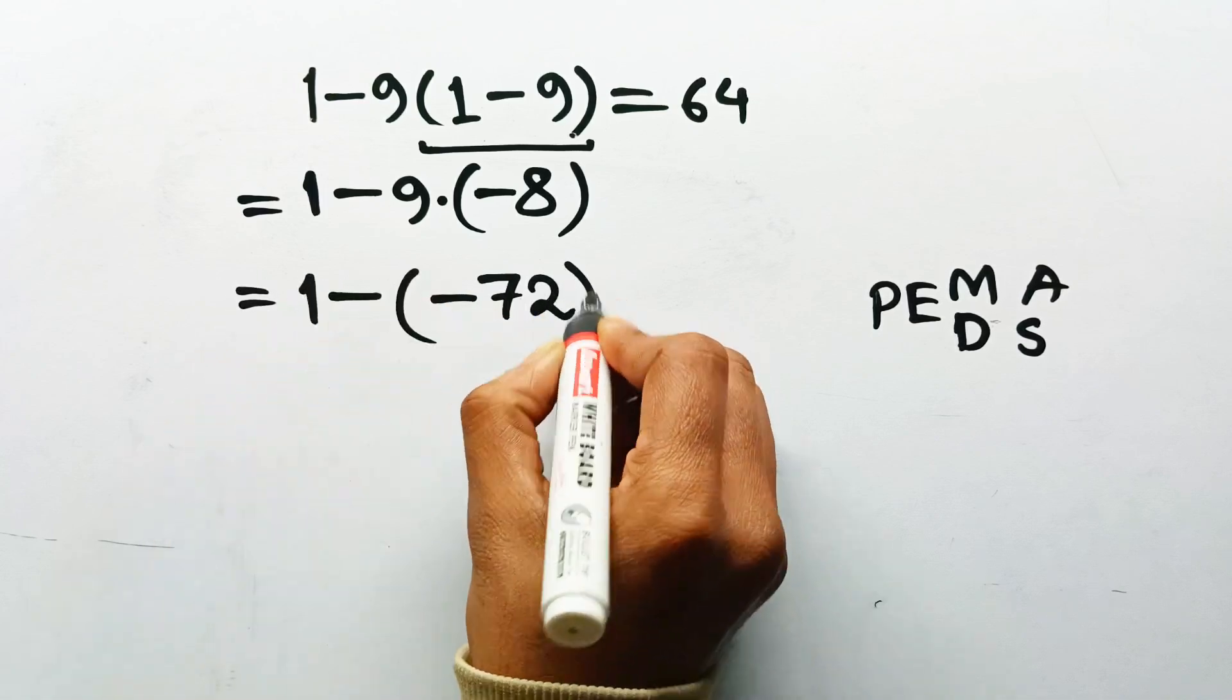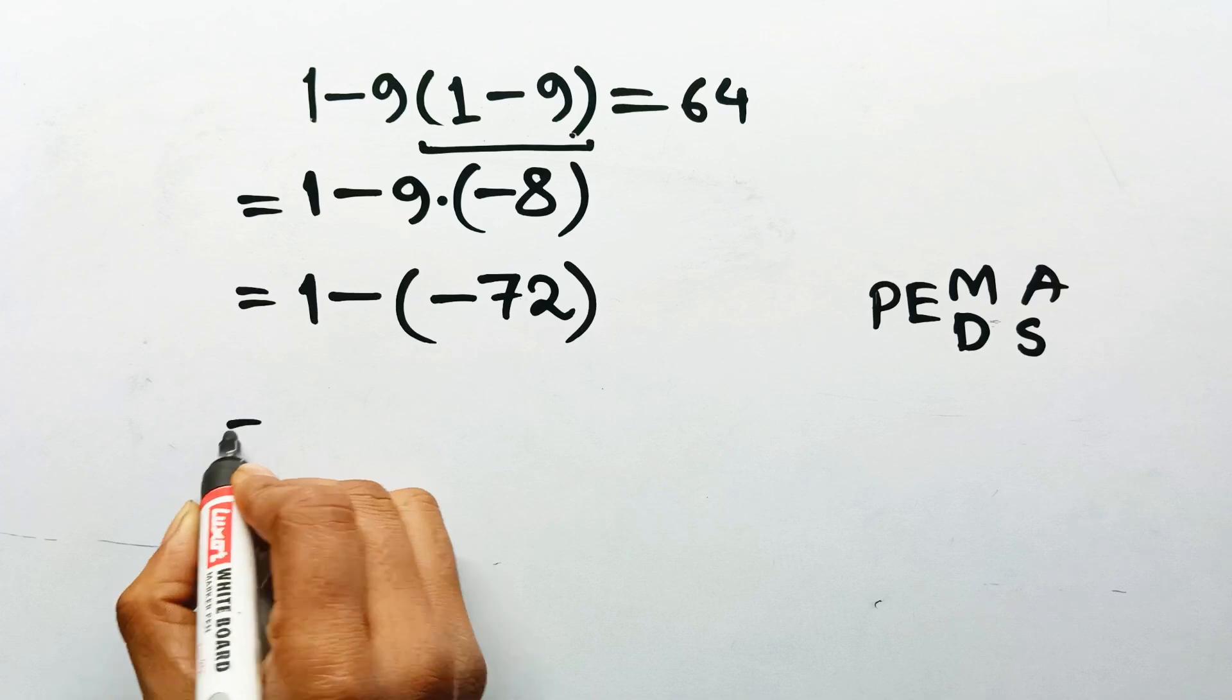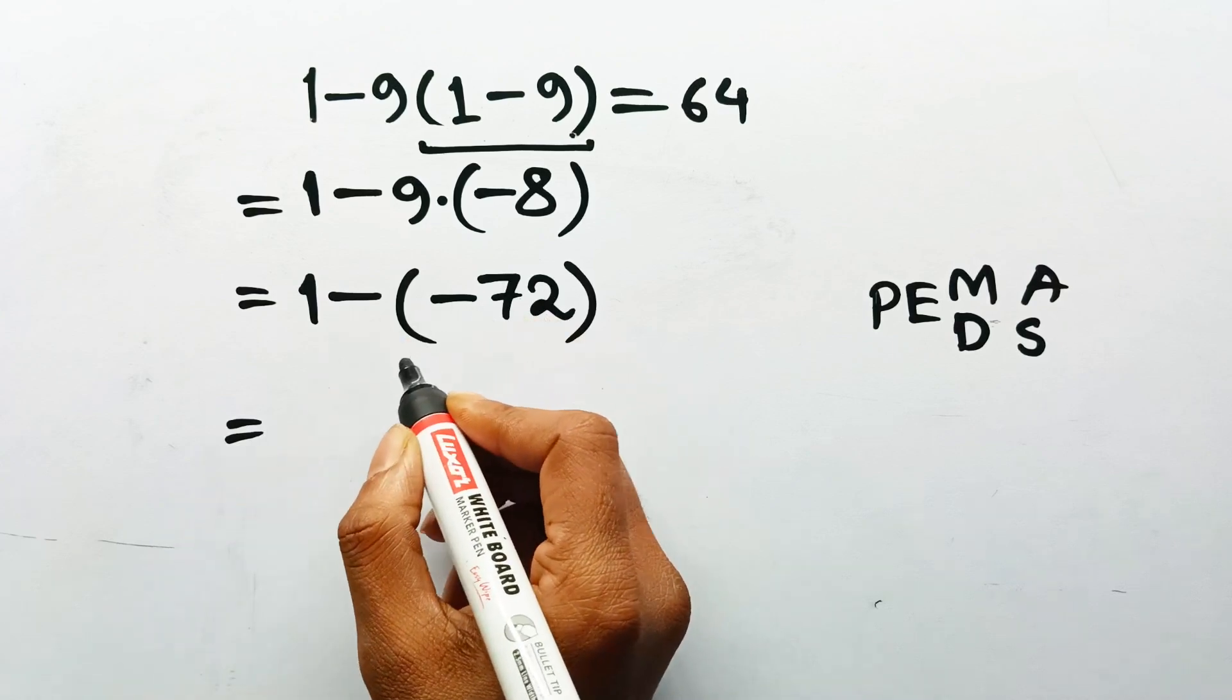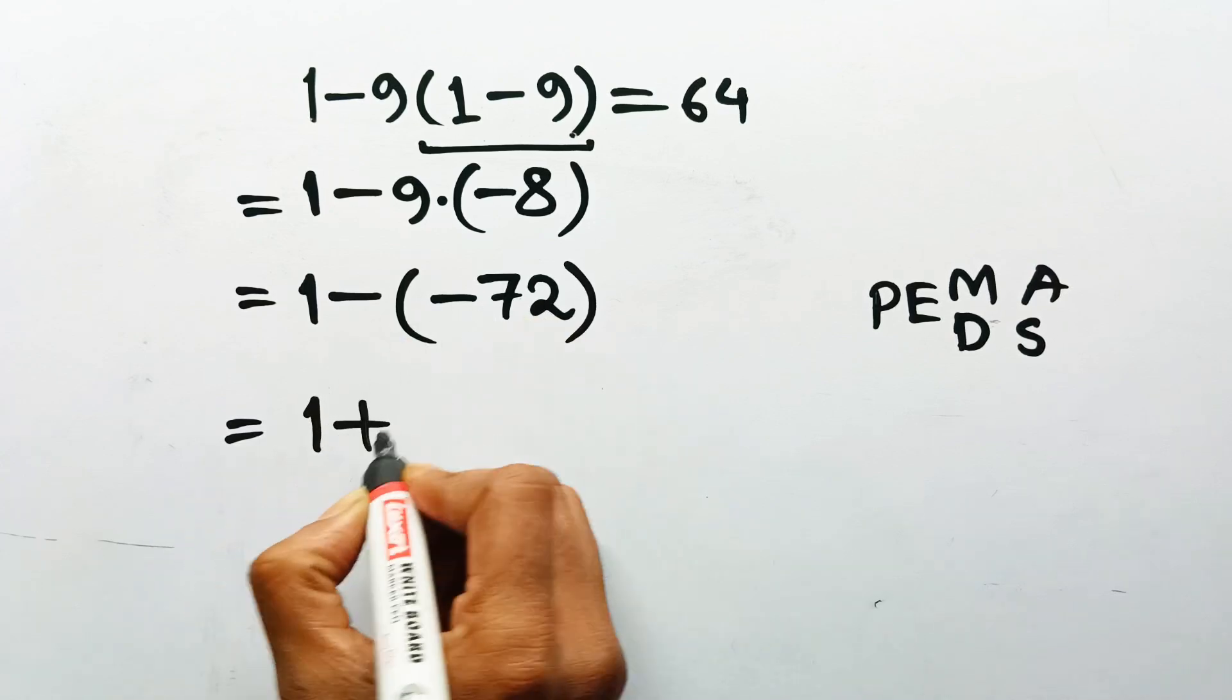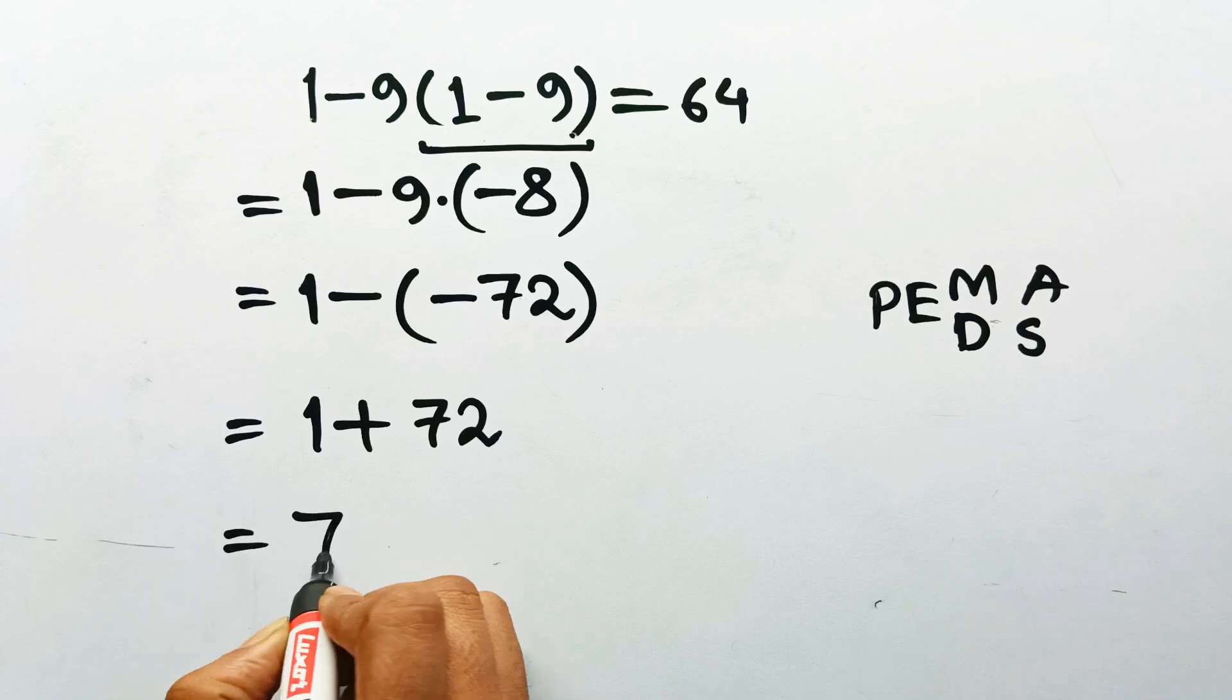1 minus negative 72. And subtraction of a negative means addition. So, this becomes 1 plus 72. Which gives us 73.